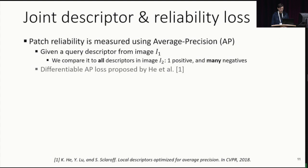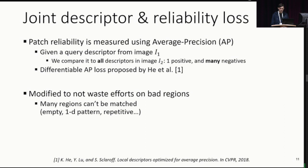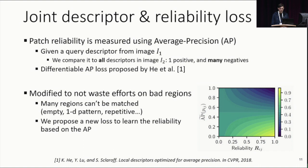The problem with this approach is that the network tries to optimize descriptors at all locations, even in bad regions like the sky or the water. So we modified the loss by introducing the notion of reliability, which is learned jointly. For reliable patches, the loss is unchanged and encourages a high AP — for reliability equal to one. For unreliable patches, the loss becomes constant without any gradient, hence avoiding wasting efforts there.